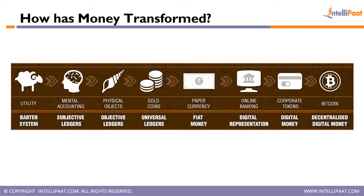People realized it was getting difficult to do transactions because what if you needed a commodity from someone who didn't have what you wanted? What came into picture was a form of mental accounting — I gave you a commodity, and maybe tomorrow you'll return a different one. Eventually, physical objects like metals and stones started being used as means of transaction, eventually evolving into gold and metal coins.